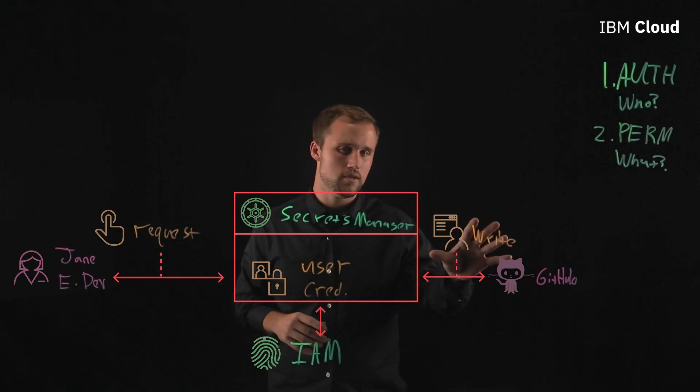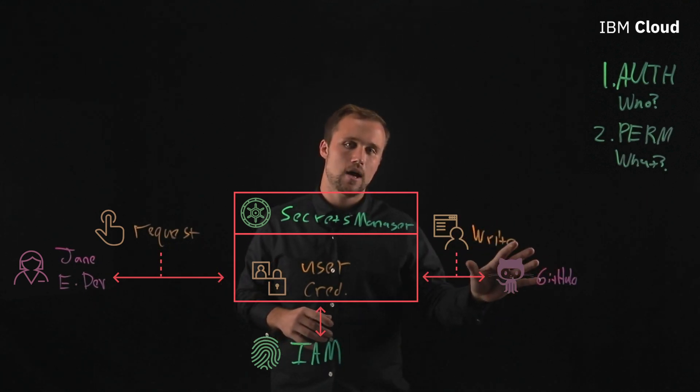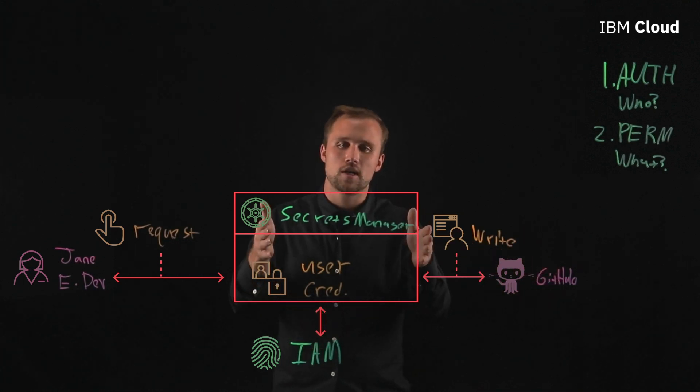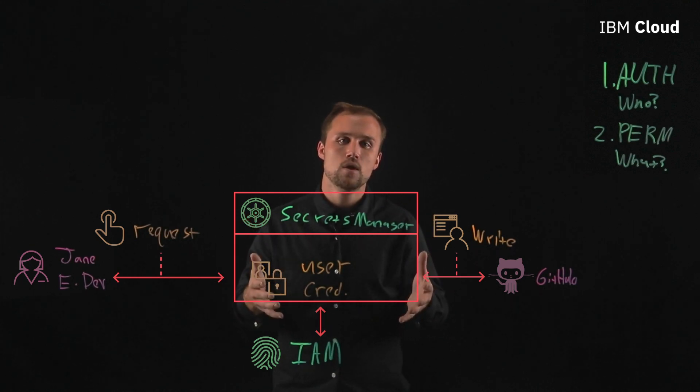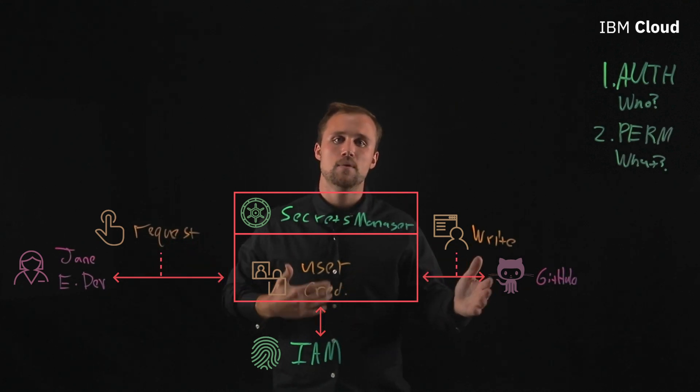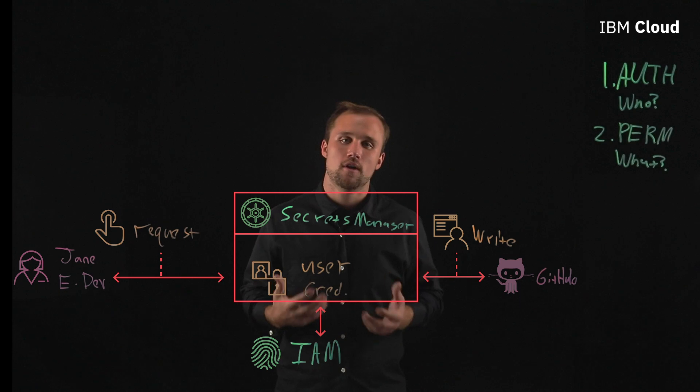So with this we now understand what it's like for a user to get the right permission and be able to access the tool of their choice or their service and be able to do this in the context of using a secrets manager service. But now let's look what it's like for a service to interact with another service and potentially where data breaches could be harmful.